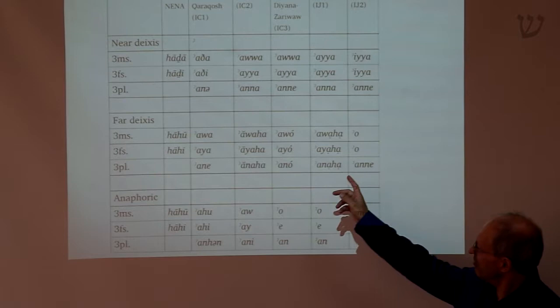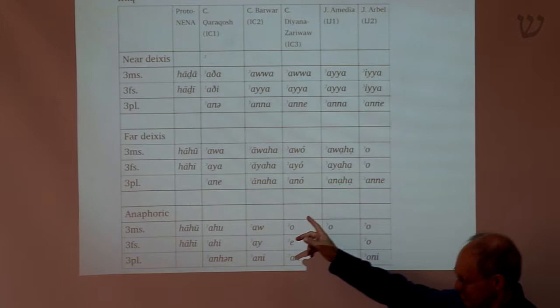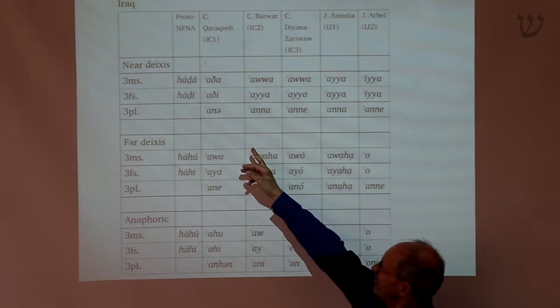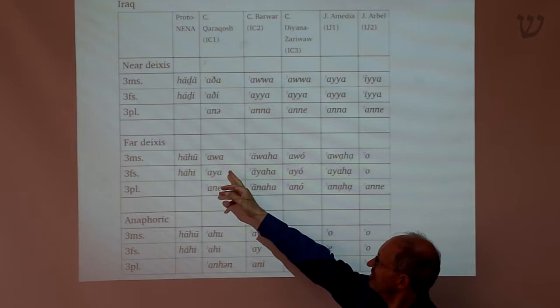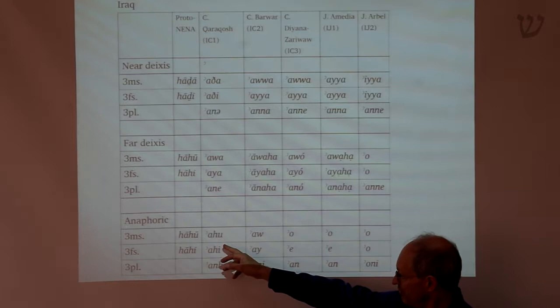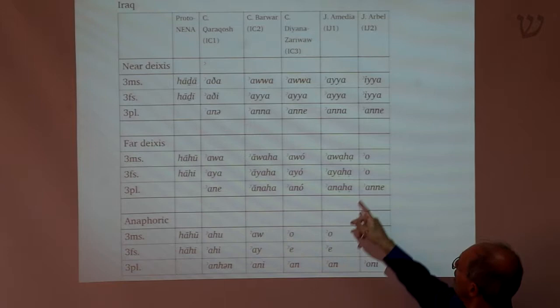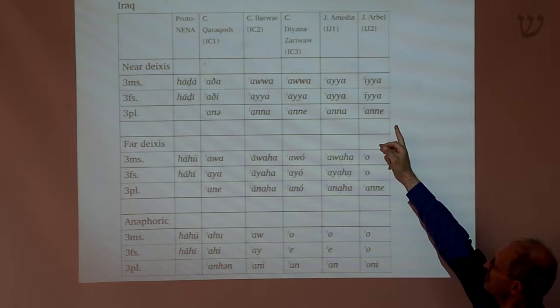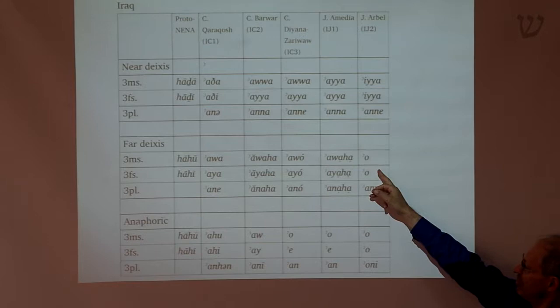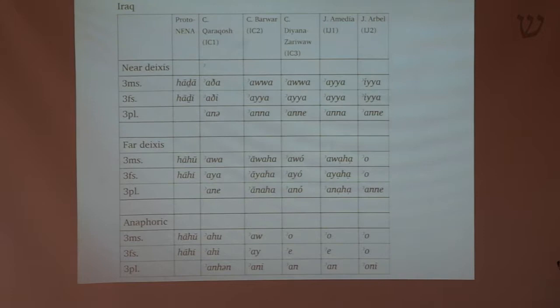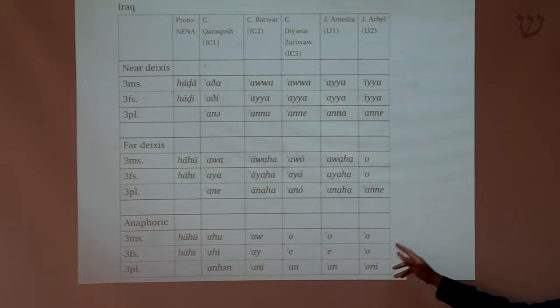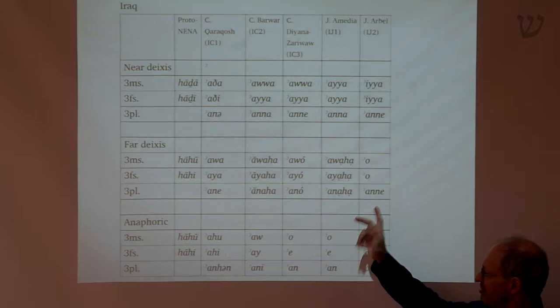Some NENA dialects have only two sets of demonstratives. In Karakosh, you have near-deixis 'ava' in the masculine singular, 'awa' in the far-deixis, but also an anaphoric 'ahu' — so three sets. But in Jewish Arbel, for instance, they have near-deixis, then the far-deixis is 'awa' and the anaphoric is also 'awa'. So there are some NENA dialects which use the same pronoun for far-deixis and anaphoric, but a lot of the NENA dialects, particularly Christian dialects, have three sets.